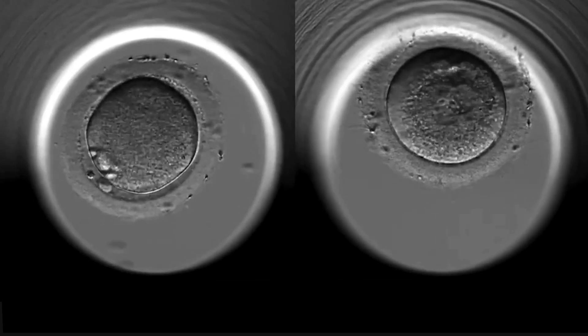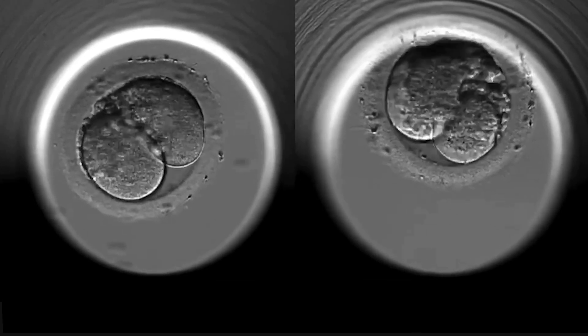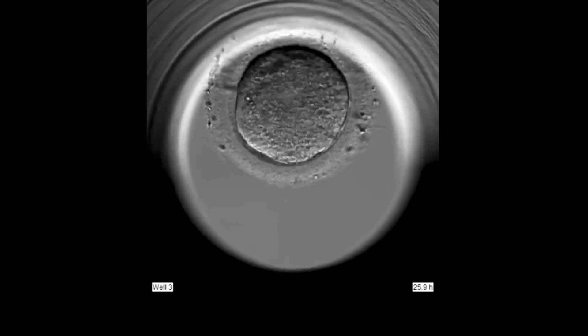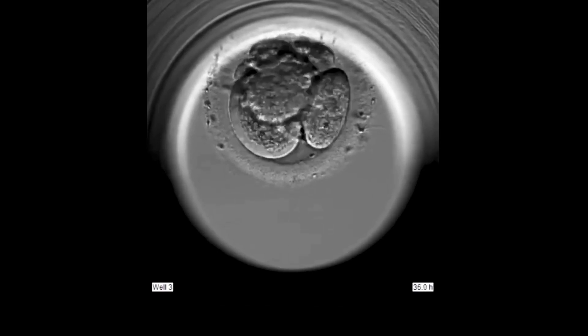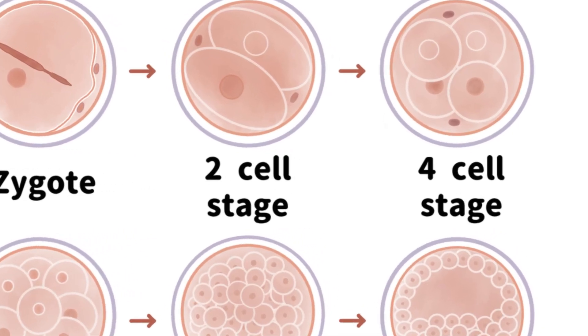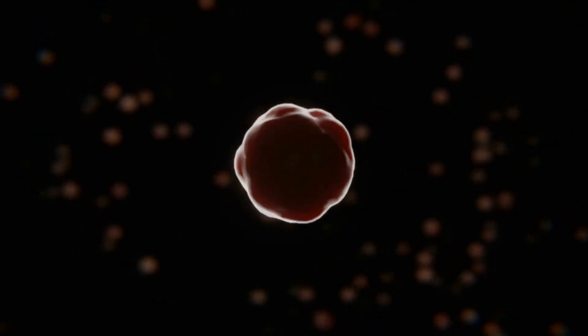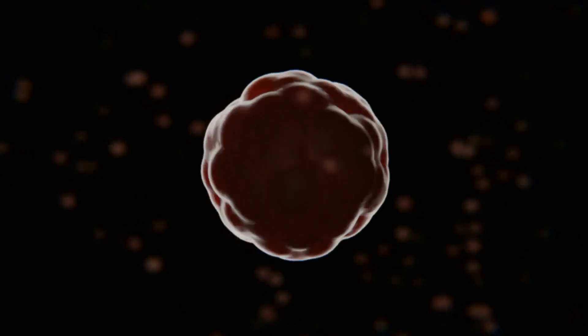The remaining chromosomes from the oocyte and the sperm unite to form a single cell, now known as a zygote. This zygote begins to divide, transforming from a single cell into a multicellular embryo. Each cell, or blastomere, holds the potential to develop into any cell type in the body.